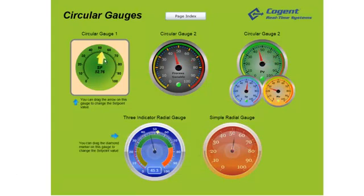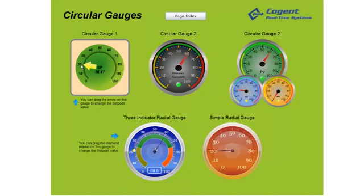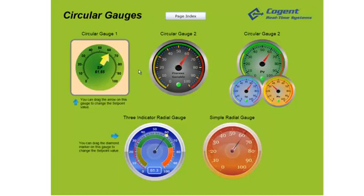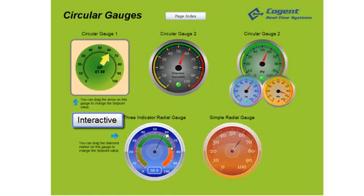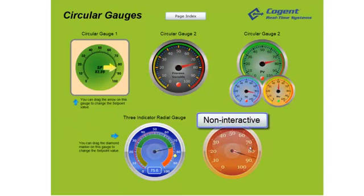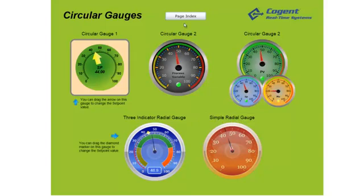As the setpoint changes, the other gauges for PV and MV are also changing. And if I manually manipulate this gauge, you can see the arrows also moving on the other gauges. Controls within DataHub WebView can often be set to be read-only from an operator perspective, or they can be set as read-write. You'll see that this gauge and the three-indicator radio gauge have been set up as manipulatable — I can drag the marker on this gauge and other things follow — whereas I cannot change the needle on the orange gauge or the other read-only gauge.